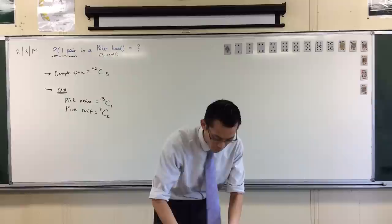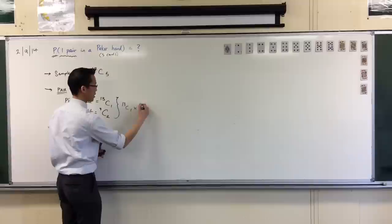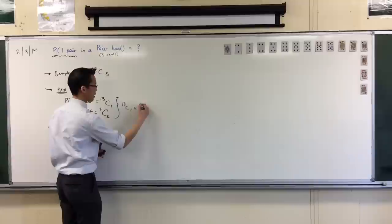So therefore, there you go, right there, that is the number of ways to pick a pair. 13 choose one times four choose two. That's just the pairs.